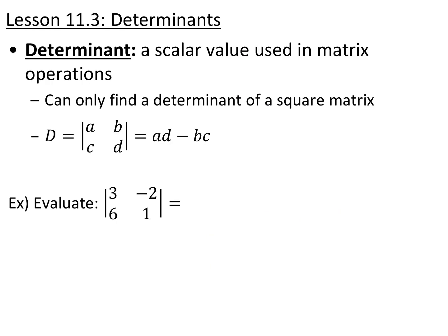Section 11.3 covers determinants. The determinant is a scalar value used in matrix operations, with many different applications. We're only going to look at determinants of 2x2 and 3x3 matrices. You can only take a determinant of a square matrix — one with the same number of rows as columns. We represent a determinant with the capital letter D and also with straight bars. If you ever see straight bars on a matrix, that means take the determinant. Brackets represent just a matrix in general, but straight bars mean take the determinant.